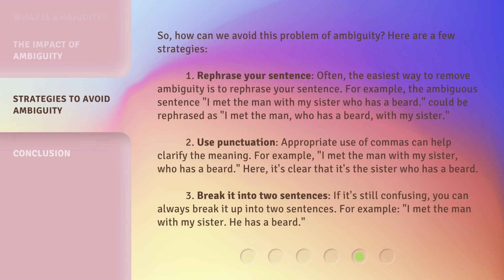So, how can we avoid this problem of ambiguity? Here are a few strategies. Strategy 1: Rephrase your sentence. Often, the easiest way to remove ambiguity is to rephrase your sentence. For example, the ambiguous sentence 'I met the man with my sister who has a beard' could be rephrased as 'I met the man, who has a beard, with my sister.'